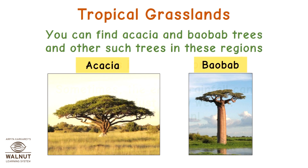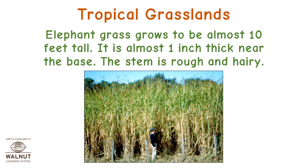You can find acacia and baobab trees and such other trees in these regions. Elephant grass grows to be almost 10 feet tall. It is almost 1 inch thick near the base, and the stem is rough and hairy.